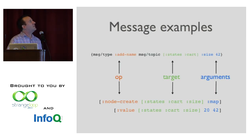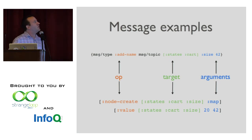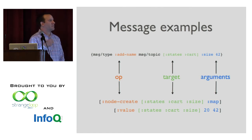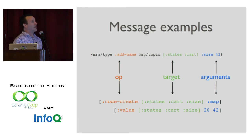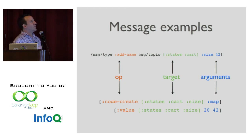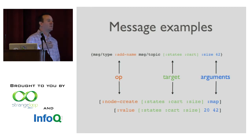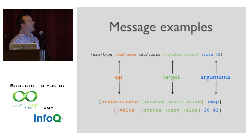I wanted to show you an example of the kinds of messages we would use. The top message is the kind of thing we would send into our application, and the bottom two are the kinds of things that might go out to the renderer — these would be mapped to functions which perform some small change in what we're rendering. Notice that there is a similarity between these messages: they all have an operation — something we want to do — a target — the thing we want to do it to — and then arguments. In the future, this is actually going to get standardized a bit.